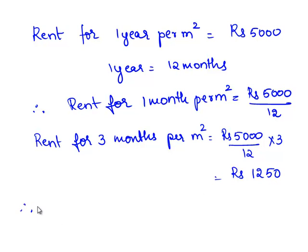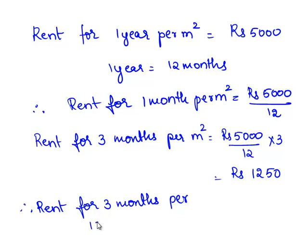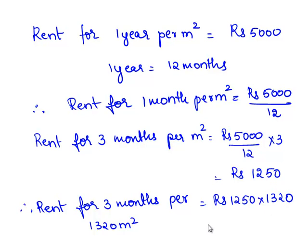Therefore, rent for 3 months for 1320 meter square is equal to rupees 1250 times 1320, which is equal to rupees 16,50,000.